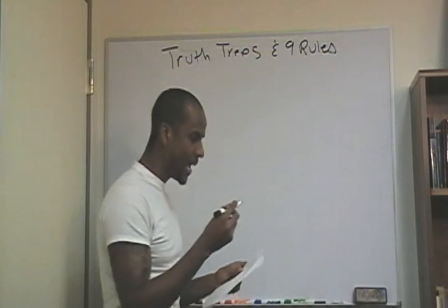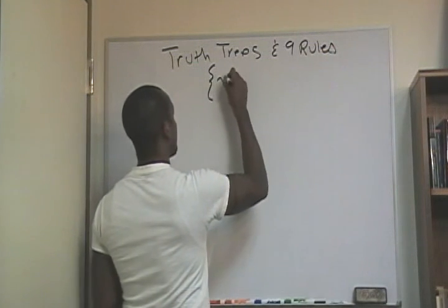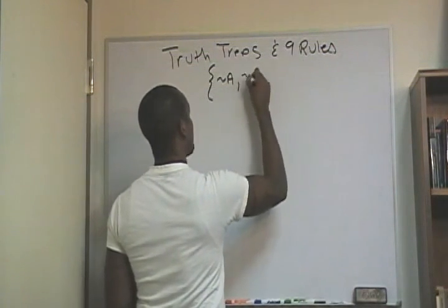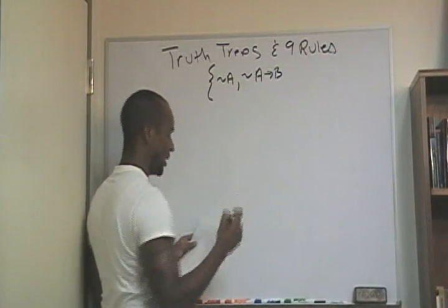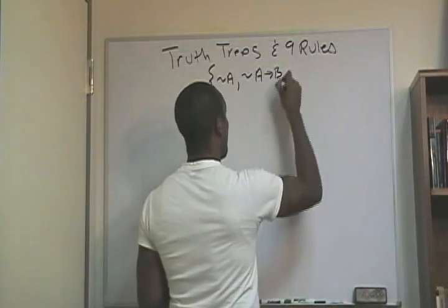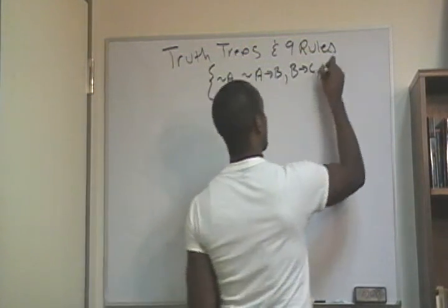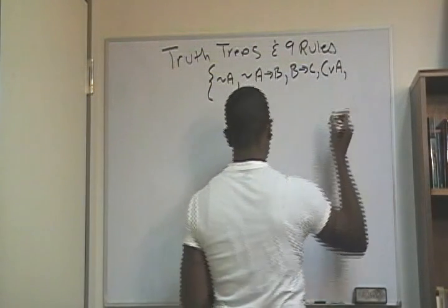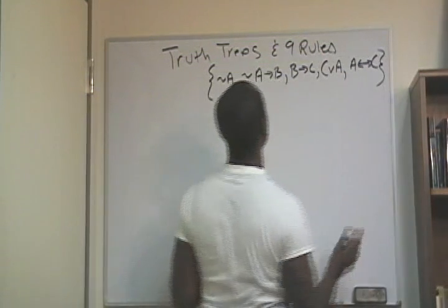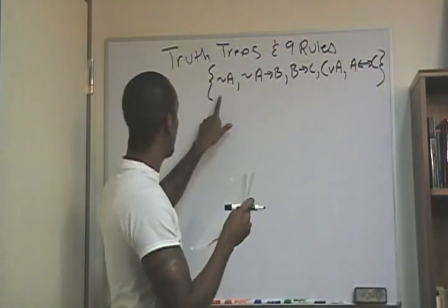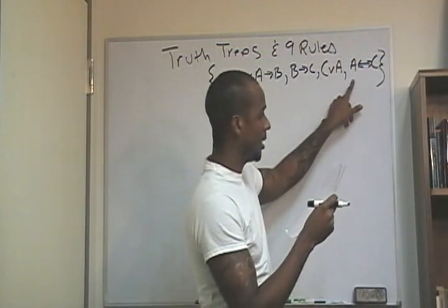Imagine that this was the set that I had. The set contained: not A; not A then B (this is just a regular conditional, not A then B); the claim B then C; the claim C or A; and then the claim A if and only if C.